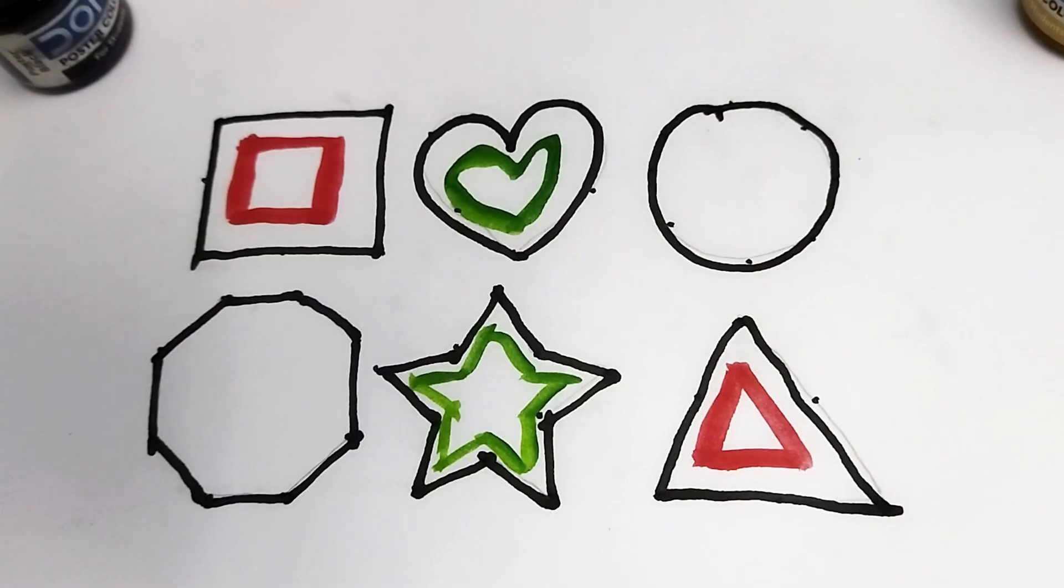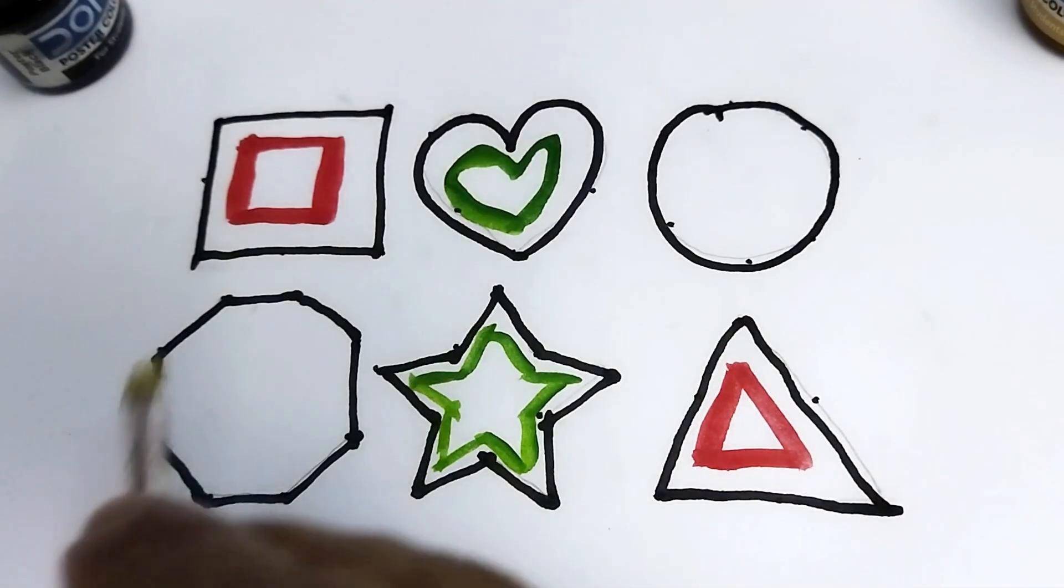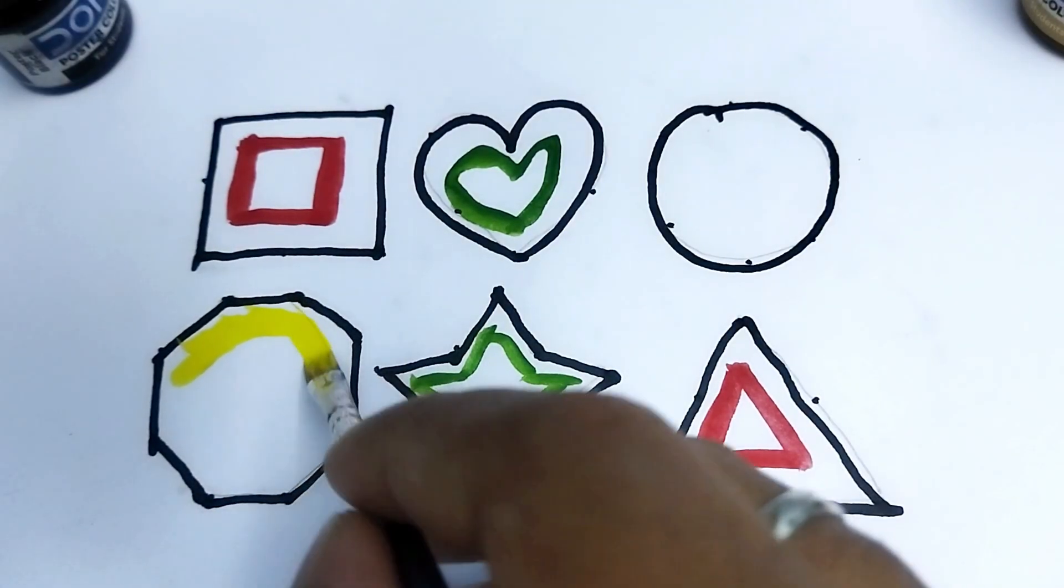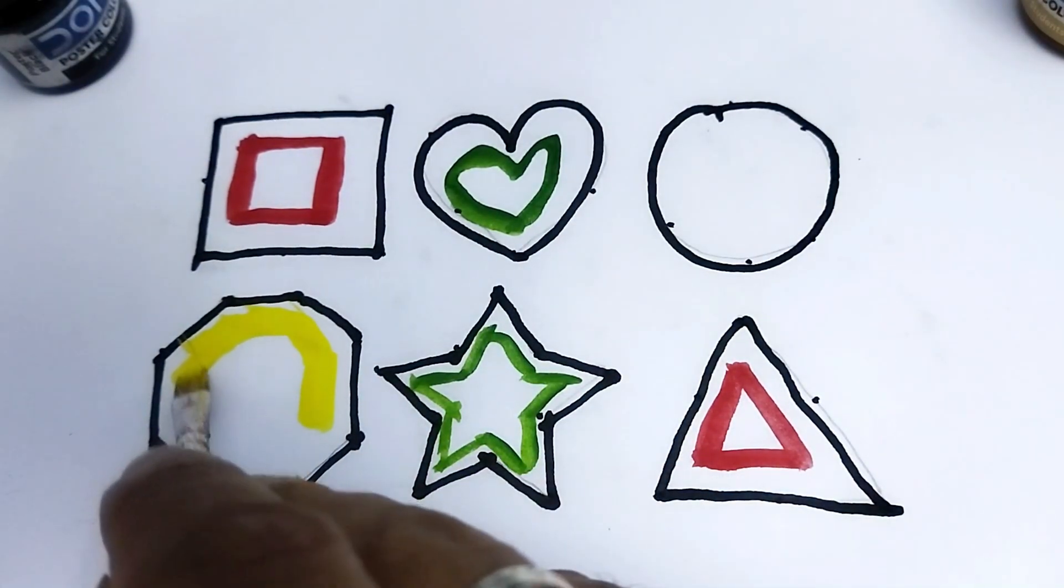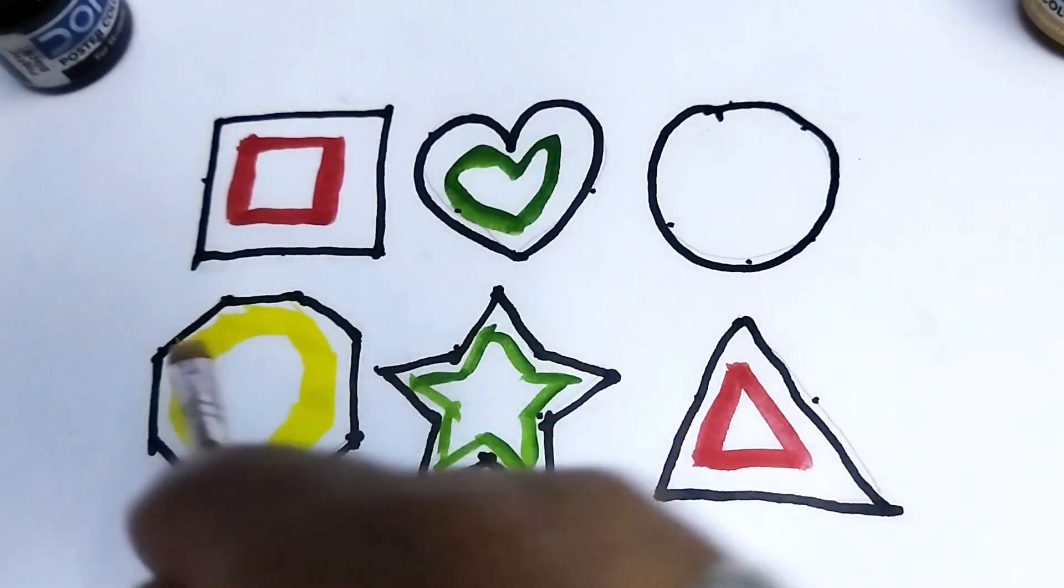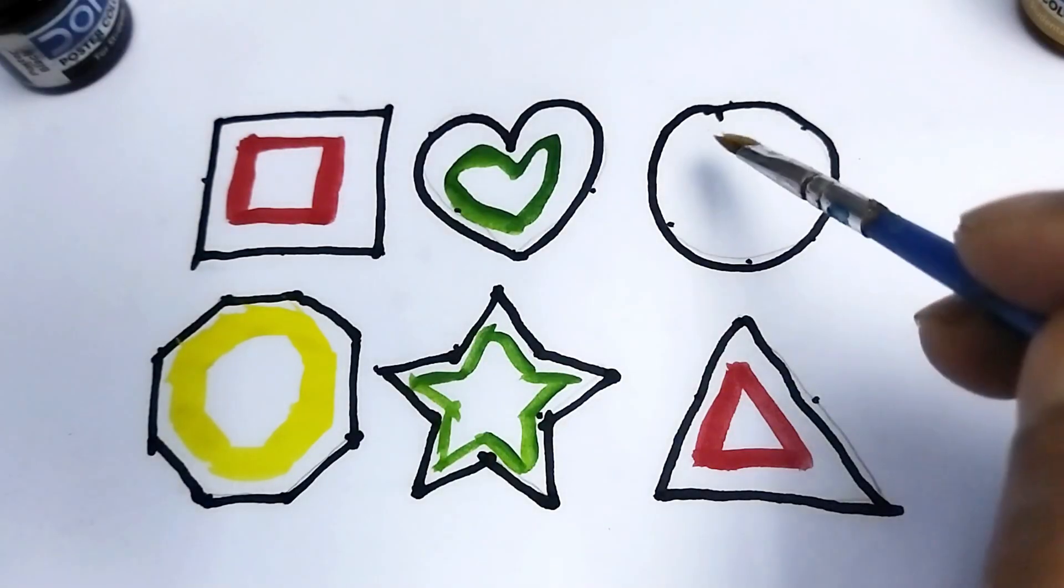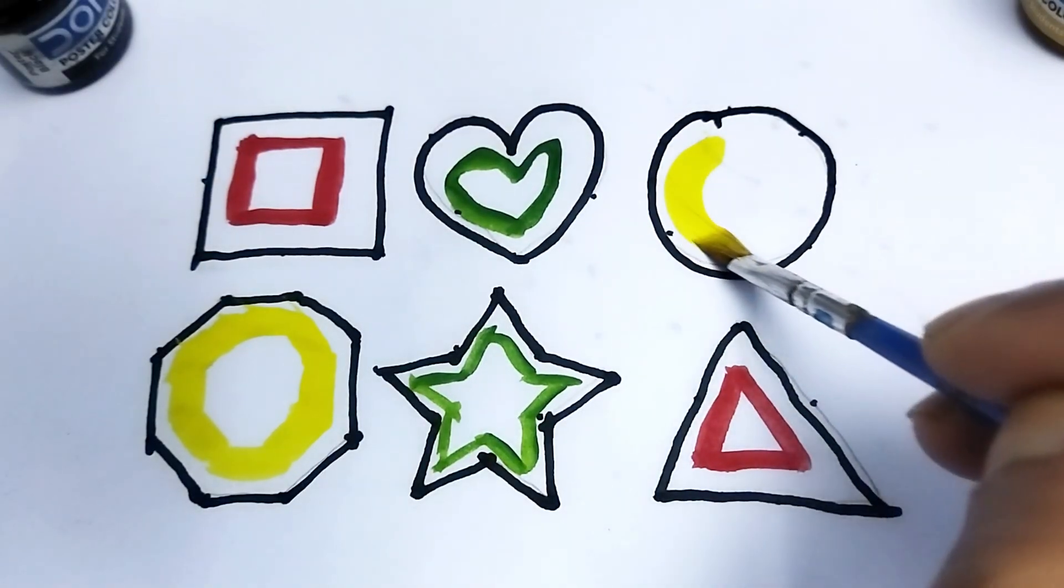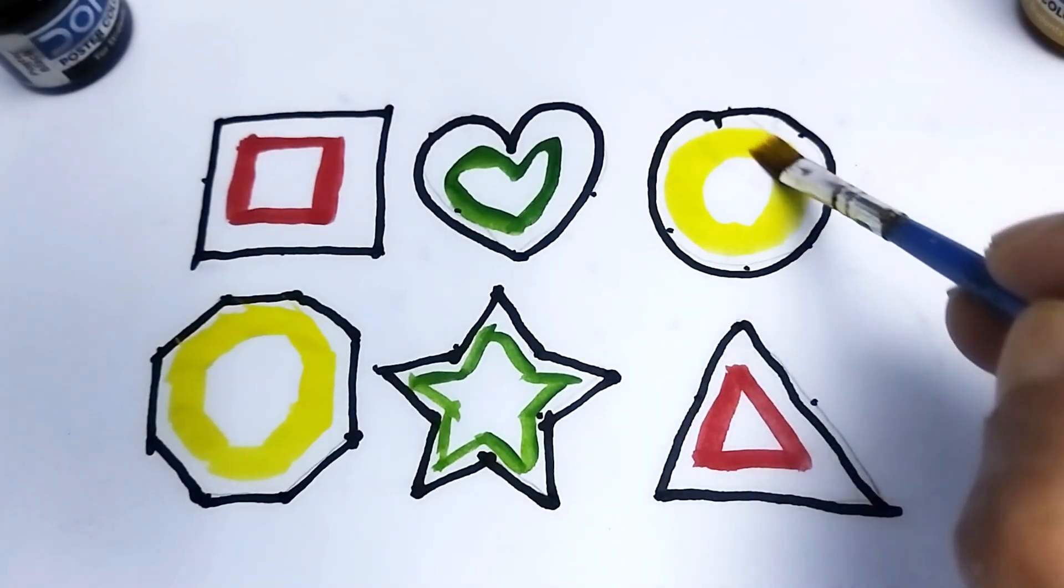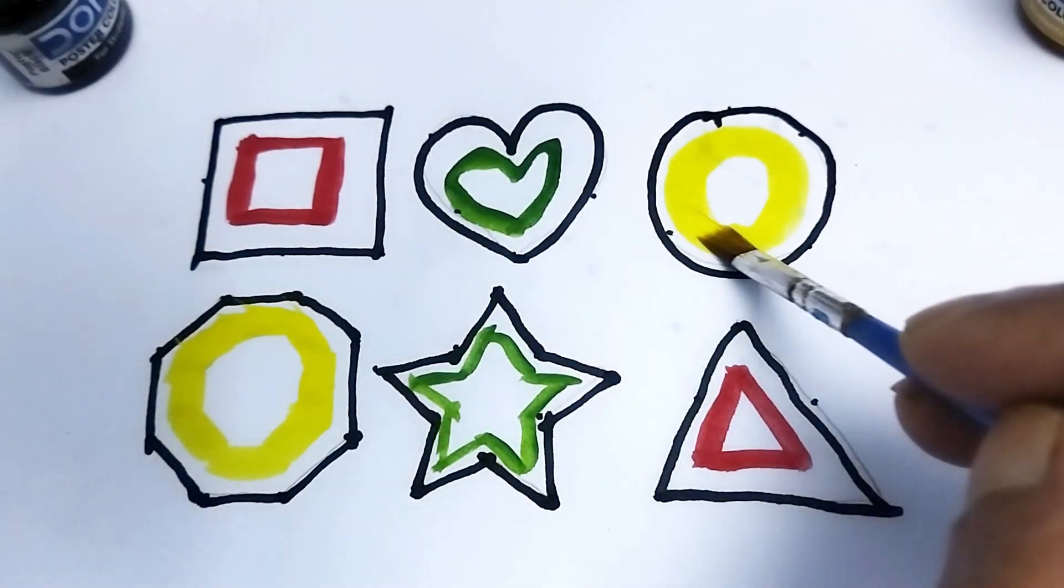Yellow color. Yellow color octagon. This is yellow color octagon, and this is yellow color circle. Yellow color circle.